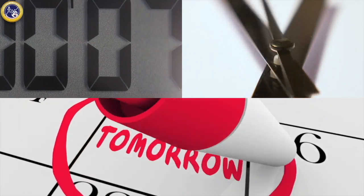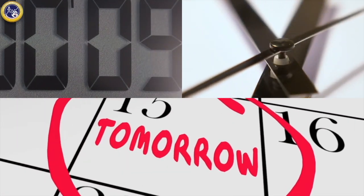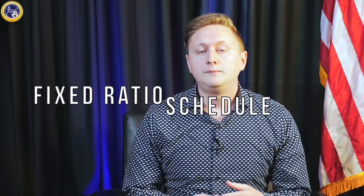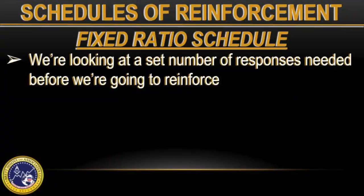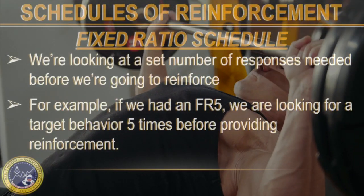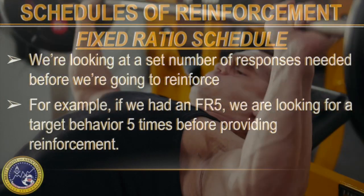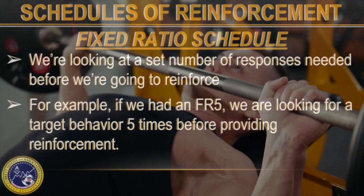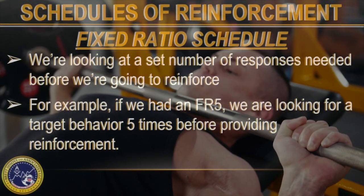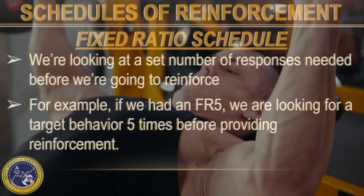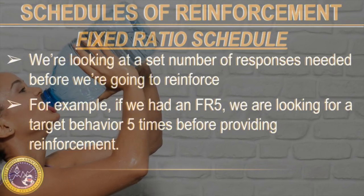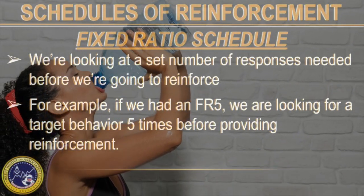A fixed ratio schedule means we're looking at a set number of responses needed before we're going to reinforce. For example, a fixed ratio five schedule means we're looking for the target behavior to occur five times — no more, no less — and then we're going to reinforce.